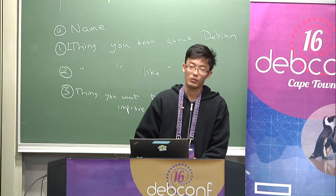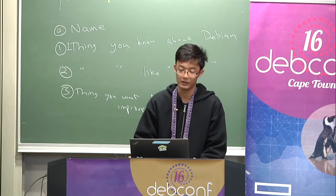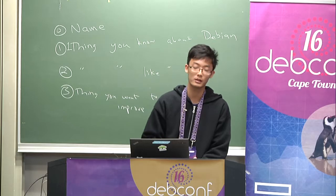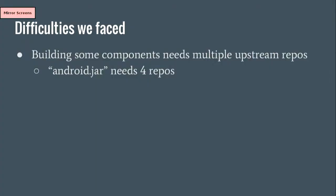We also have other difficulties, like some components needing multiple upstream repos. For example, Android.jar — which is the Android platform framework API stub — needs four repos from the Android repositories. We don't like to merge multiple upstreams into one package, but we have to in this case.